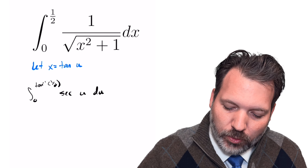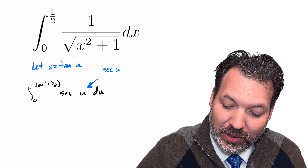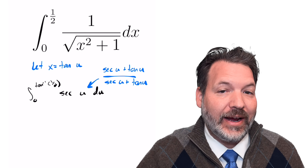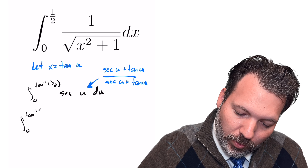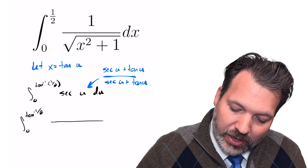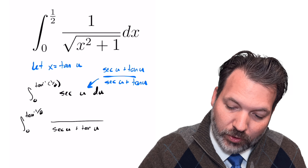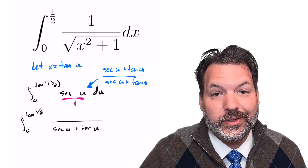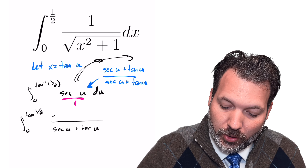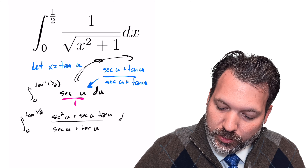This next part is pretty tricky. We're going to multiply secant u by the fraction (secant u plus tan u) over itself. This probably looks weird, but it gives us something we can do substitution with. The denominator becomes secant u plus tangent u, and in the numerator we distribute that secant u to get secant squared u plus secant u times tangent u, and we still have our du.